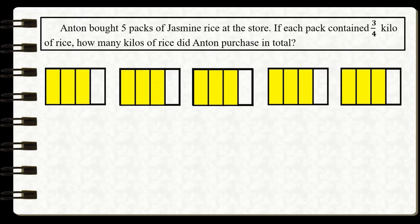The shaded parts represent the amount of rice contained in each pack. Now we are going to count how many parts are shaded in all packs — that's 1, 2, 3, 4, 5, 6, 7, 8, 9, 10, 11, 12, 13, 14, 15 shaded parts in total.